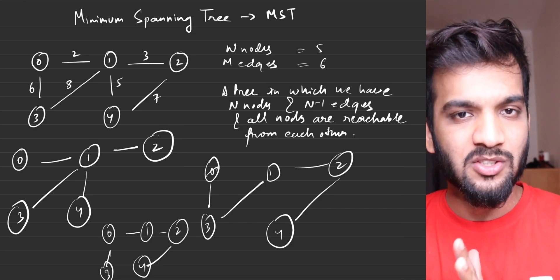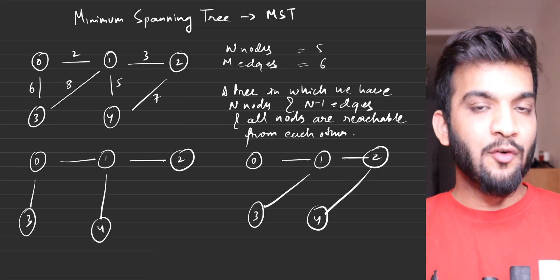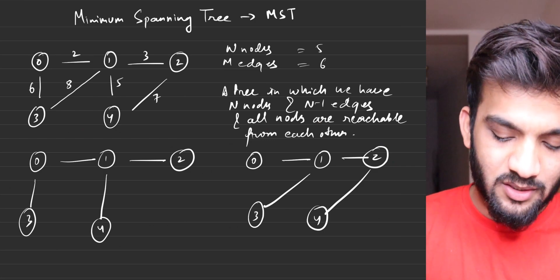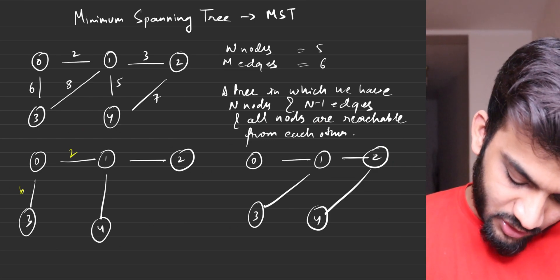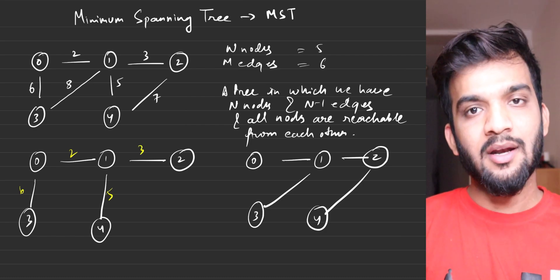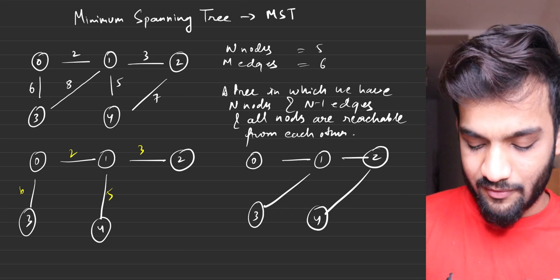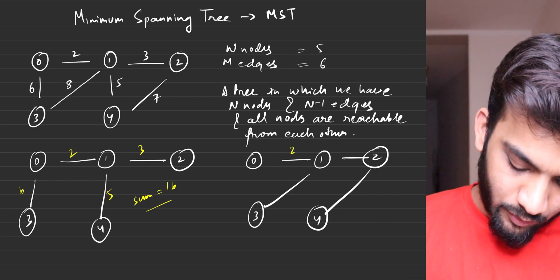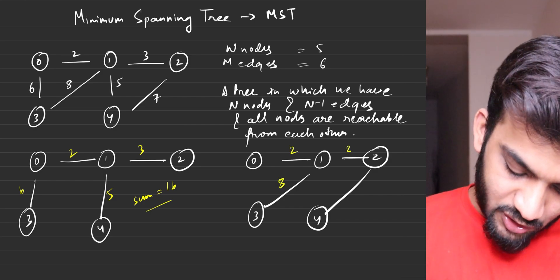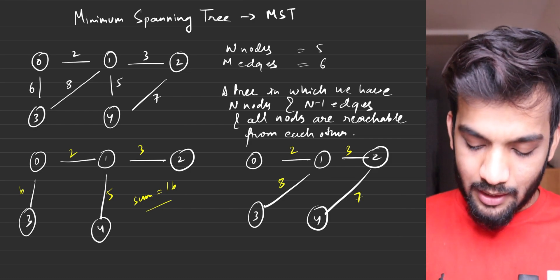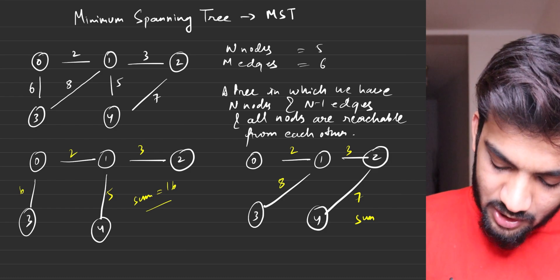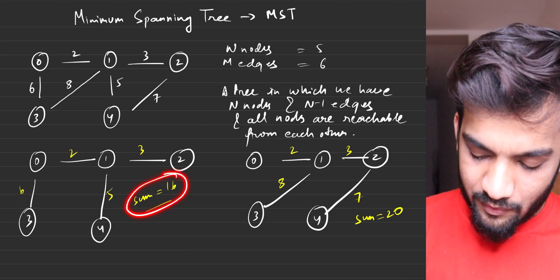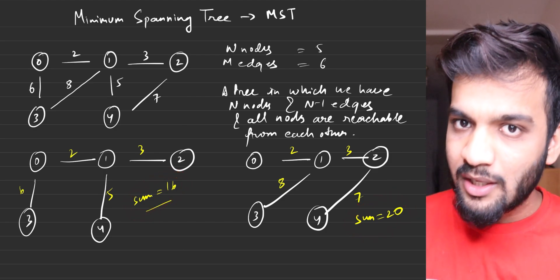Now write the edge weights on each spanning tree. For the first spanning tree, the weights are 6, 2, 5, and 3 — summing to 16. For the second spanning tree, the weights are 2, 8, 3, and 7 — summing to 20. You can draw all spanning trees, calculate their sums, and compare.